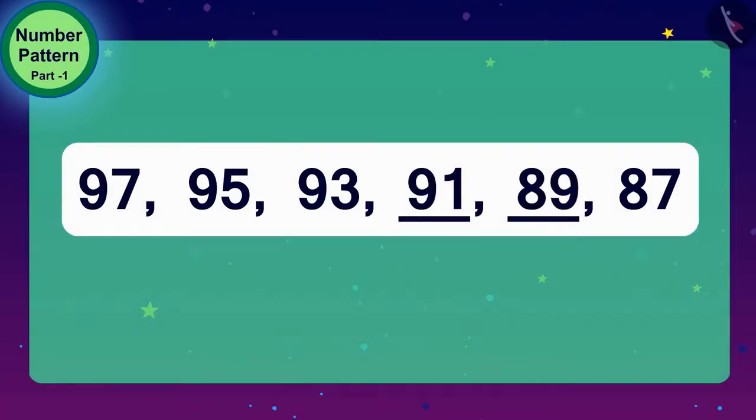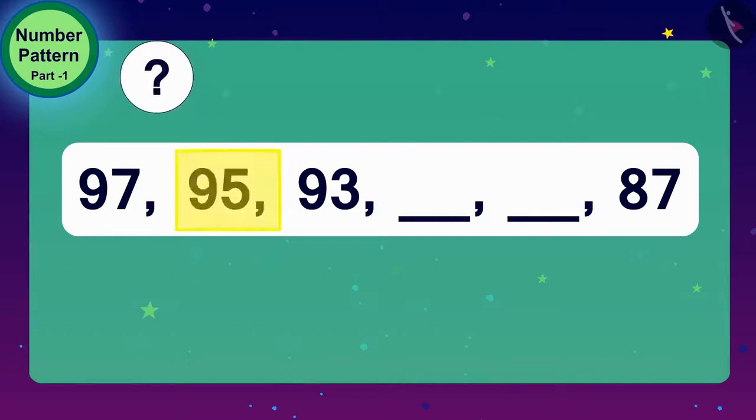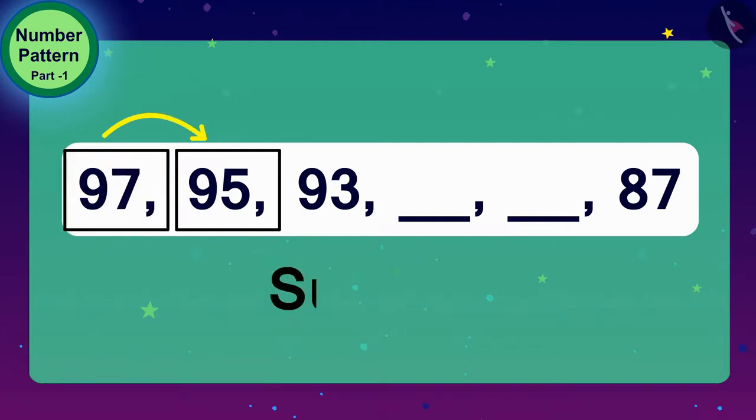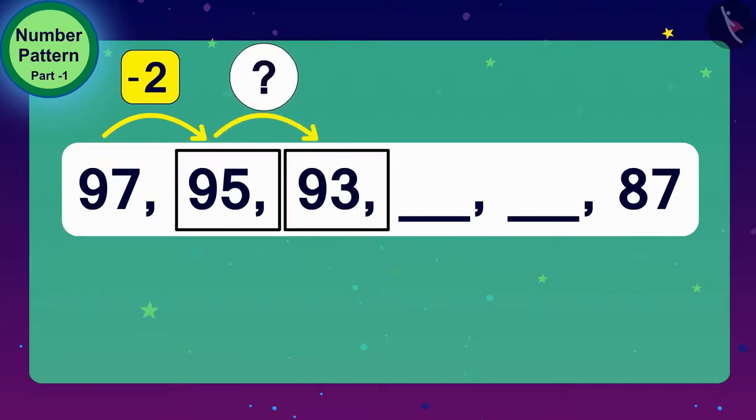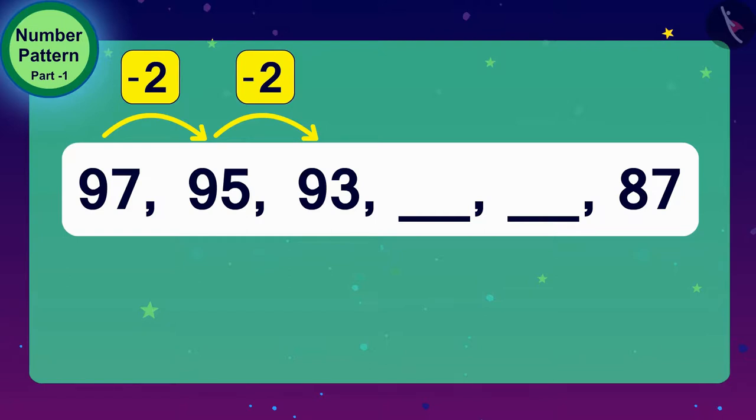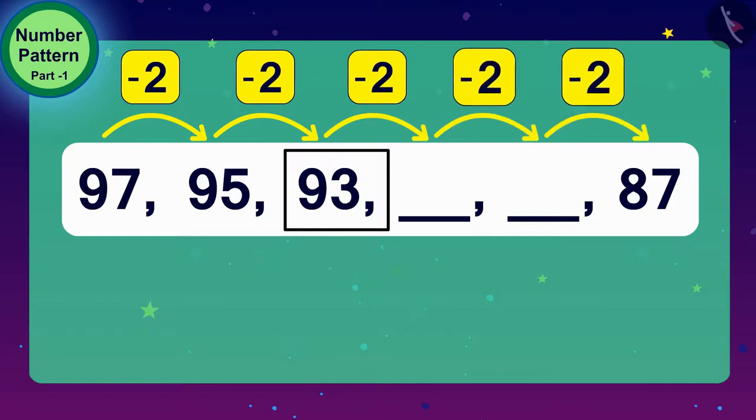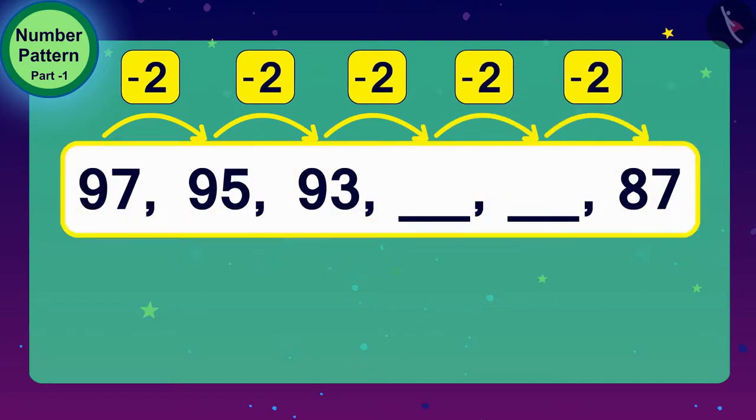Well done, children. You have got the right answer. What do we have to do to get 95 from 97 here? Yes, we have to subtract 2 from 97. And what to do to get 93 from 95? Exactly. Once again, subtract 2. So, to get the next number in this number pattern, we need to subtract 2 from the number before it. Here is the rule of this number pattern.